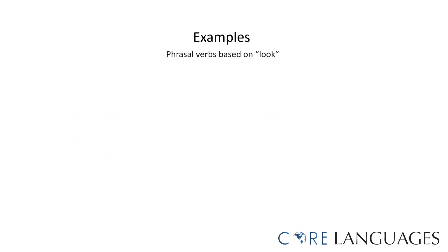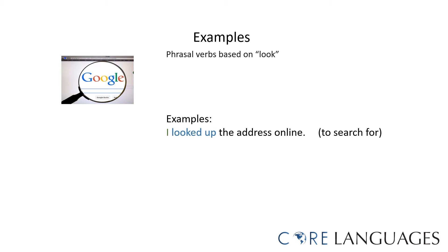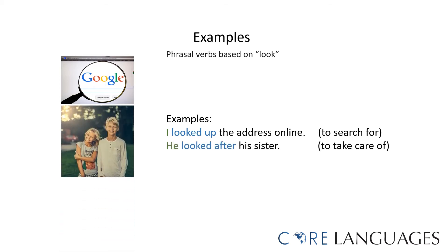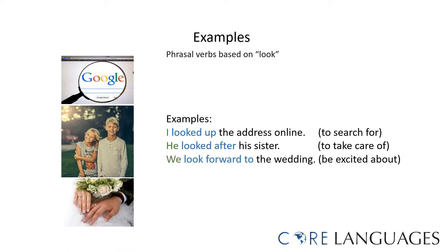Here are examples of sentences using phrasal verbs with the verb 'look.' I looked up the address online — to look up means to search for; I could also say I searched for the address online. He looked after his sister — to look after means to take care of; I could also say he took care of his sister. We look forward to the wedding — to look forward to means to be excited about; I could also say we are excited about the wedding.